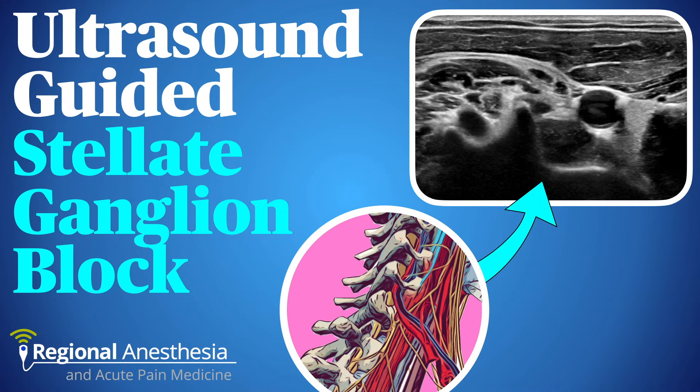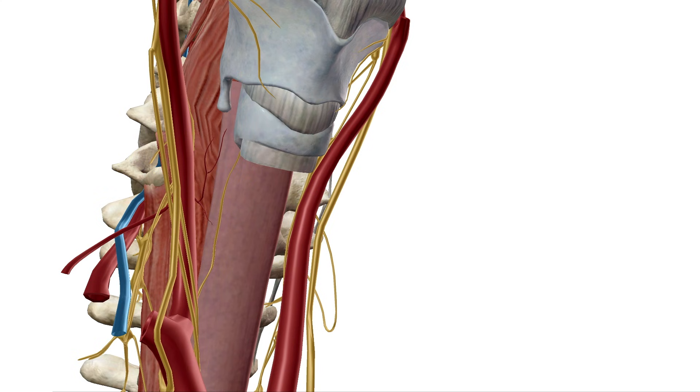X-ray guidance is limited by its inability to define soft tissue fascia planes and vasculature. Ultrasound-guided stellate ganglion blocks are straightforward and offer real-time information on where the needle tip is relative to the target and neighboring structures.